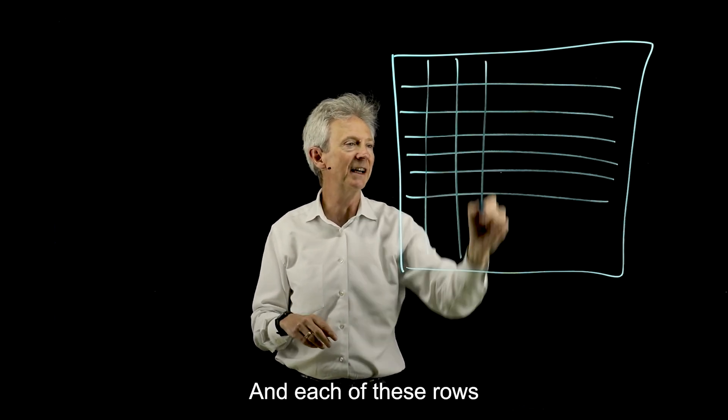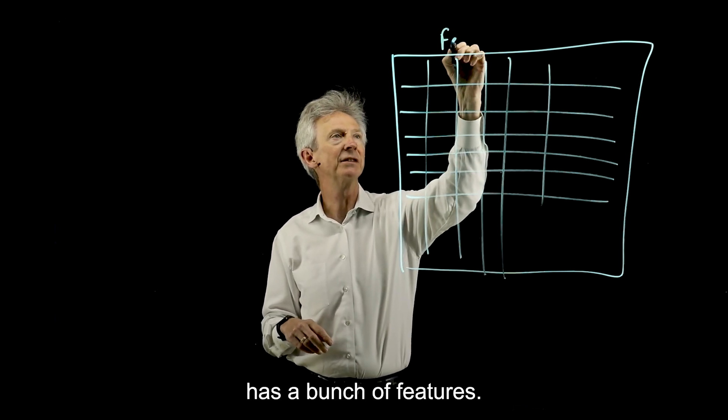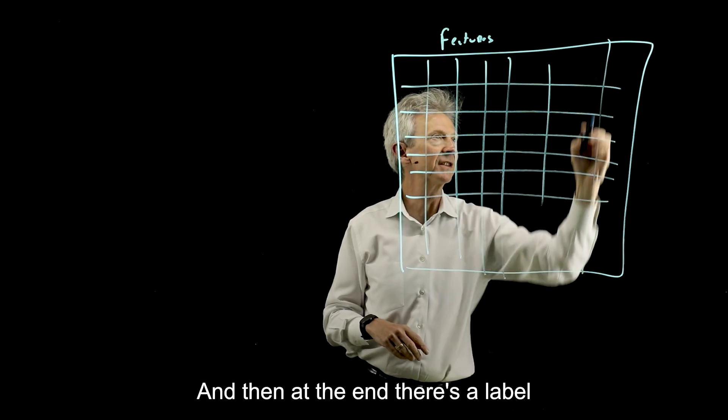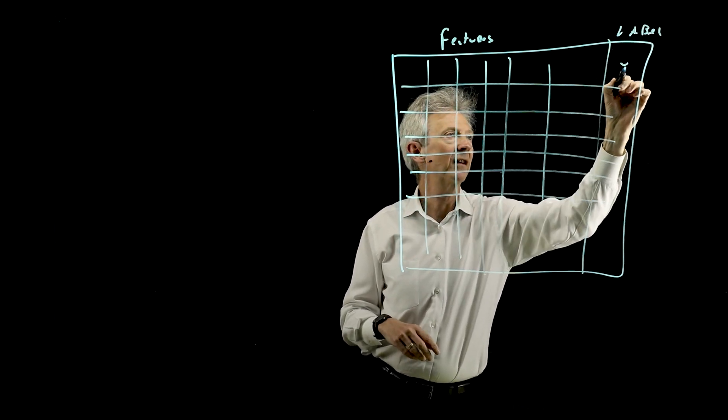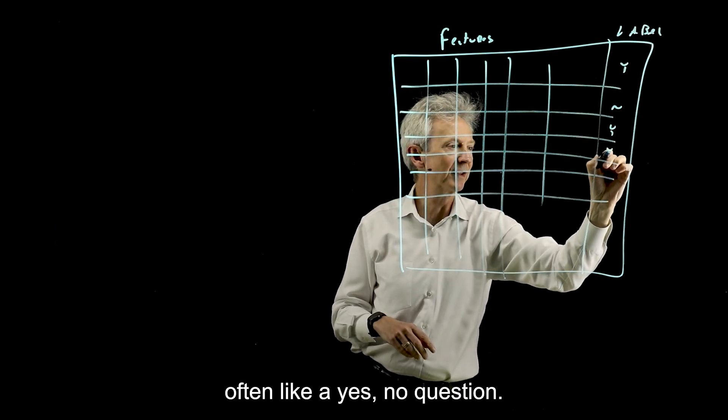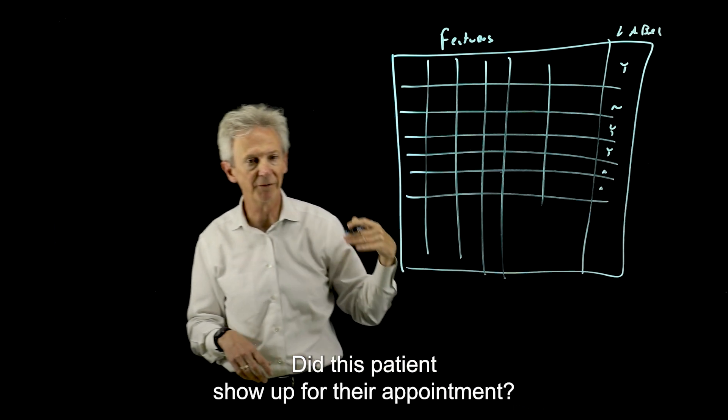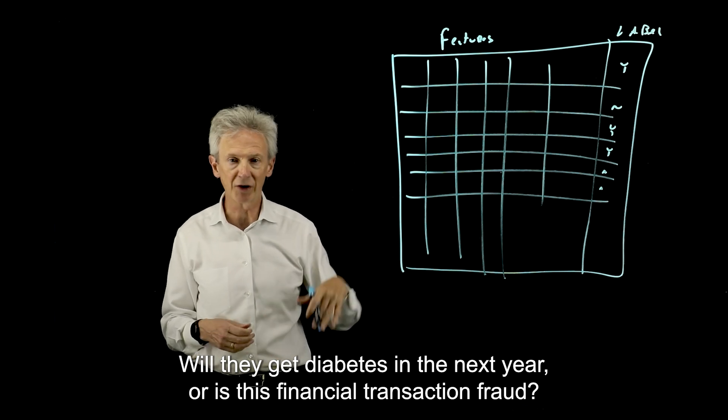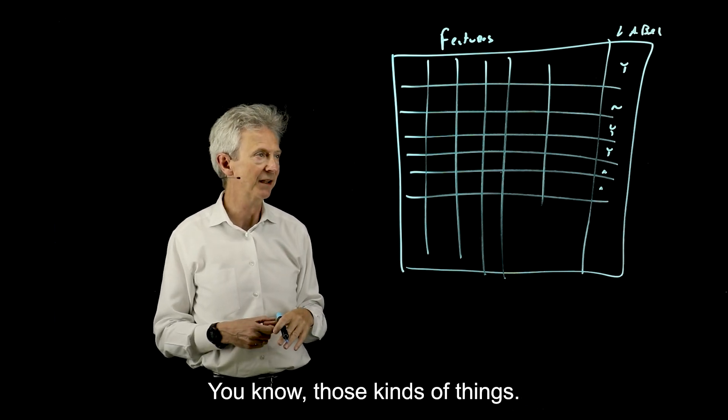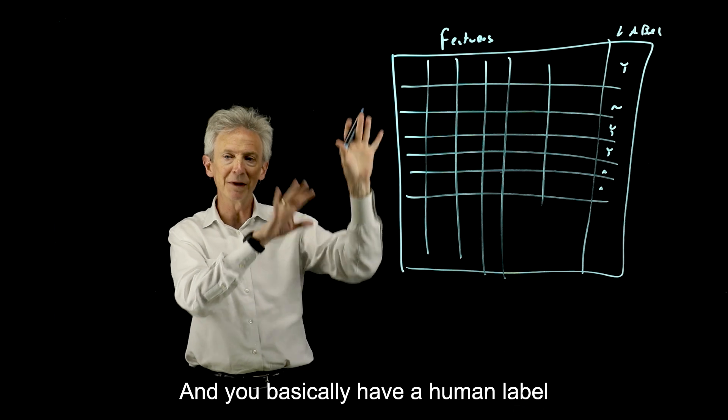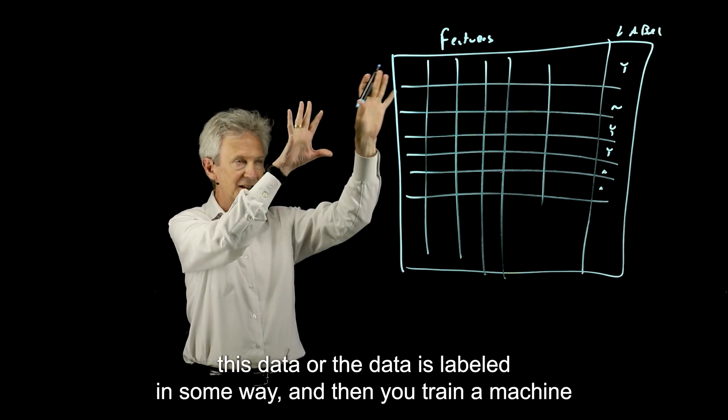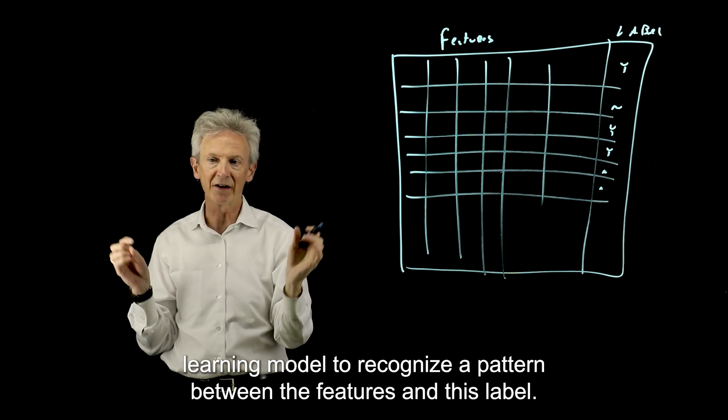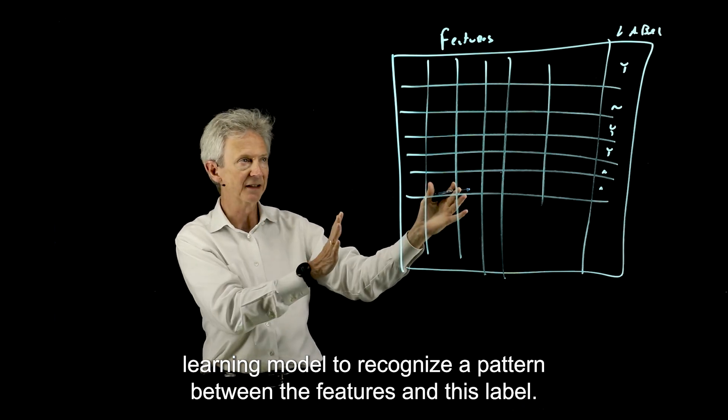And each of these rows has a bunch of features. And then at the end, there's a label, often like a yes-no question. Did this patient show up for their appointment? Will they get diabetes in the next year? Is this financial transaction fraud? Those kinds of things. And you basically have a human label this data or the data is labeled in some way, and then you train a machine learning model to recognize a pattern between the features and this label.